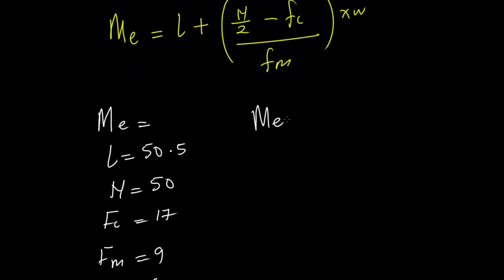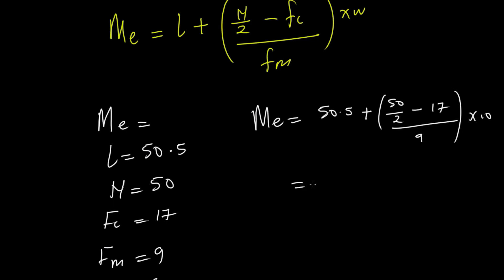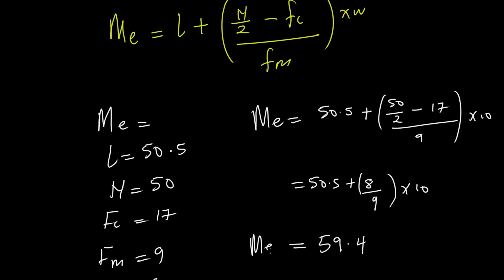Now inserting all values into the formula: Me equals 50.5 plus, open bracket, 50 divided by 2 minus 17, close bracket, over 9, multiplied by 10. This simplifies to 50.5 plus (25 minus 17) over 9, times 10, which is 50.5 plus 8 over 9 times 10. Calculating this gives a median of approximately 59.4.